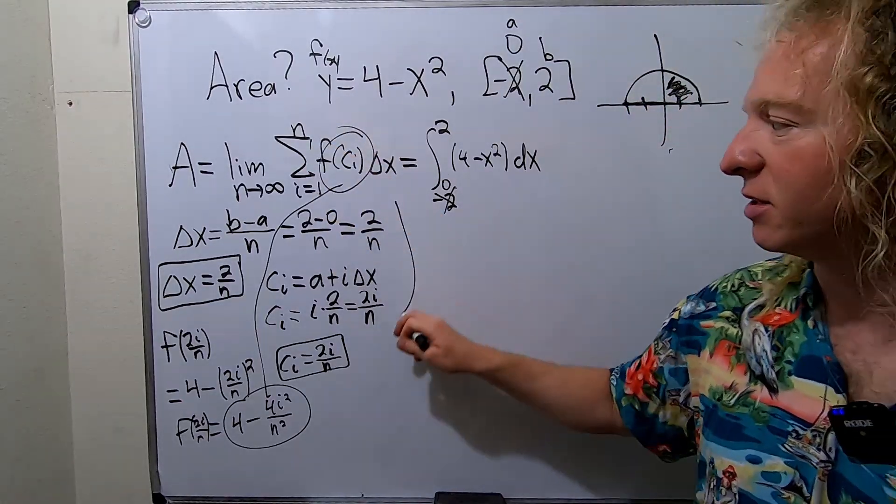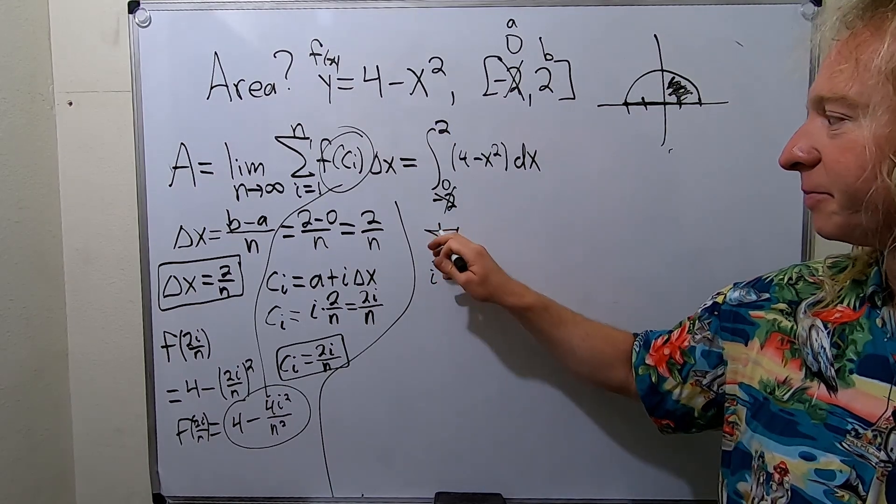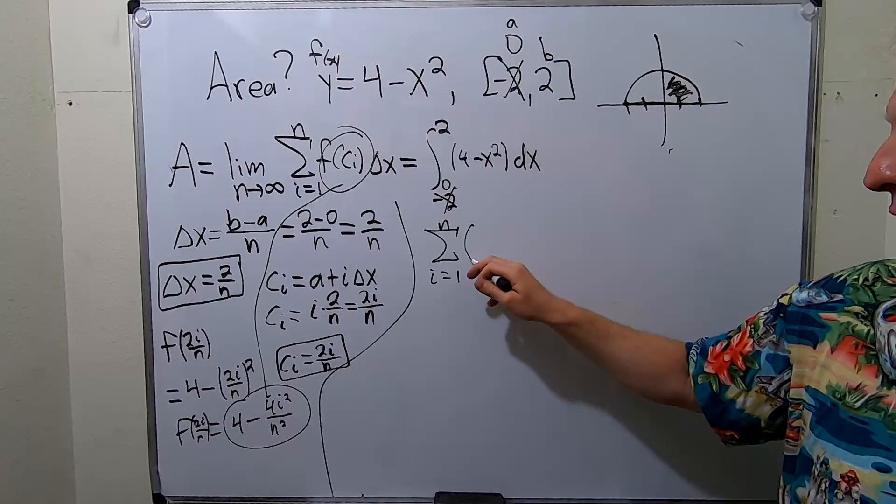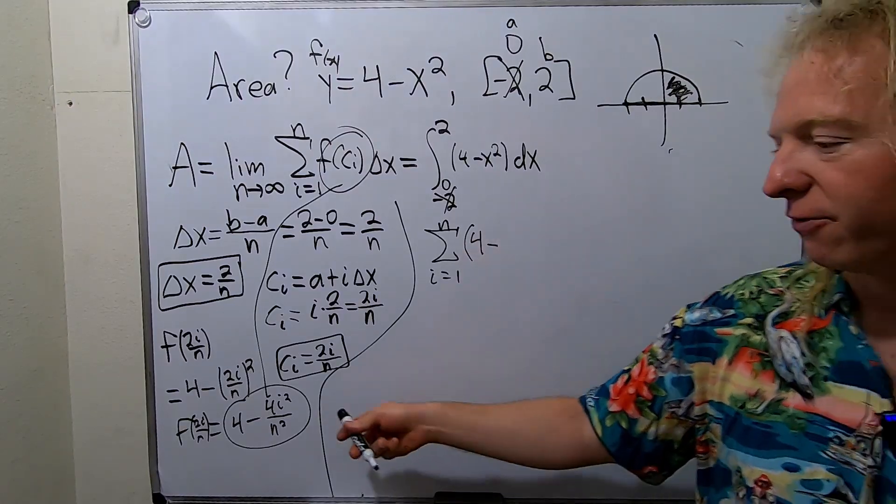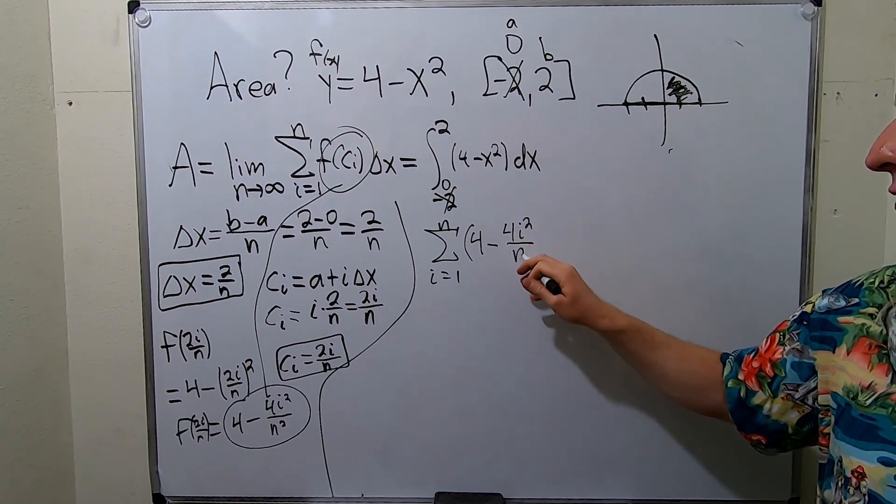Let's go ahead and write the summation sign. So we have the summation as i runs from 1 to n of this piece. So we work that out. It's 4 minus 4i squared over n squared.